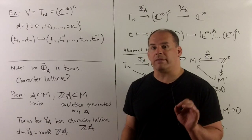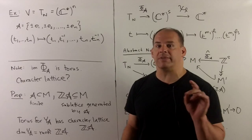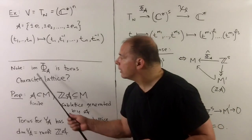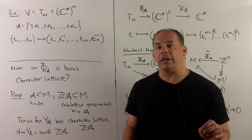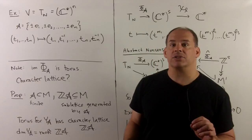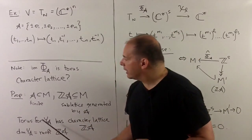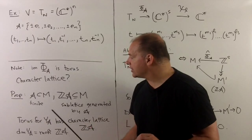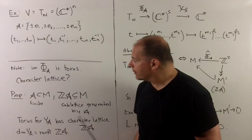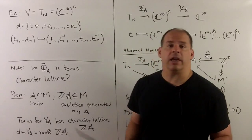For our next description of a toric variety, we need a little abstract nonsense. This gives us the description of affine toric varieties in terms of ideals and makes dealing with the Zariski closure clearer. The image of φ_A is a complex torus, and a natural question is: what is the character lattice? A group theorist who knows the character lattice knows the torus. Proposition: if A is a finite subset of the character lattice M, and we take the Z-span of A inside M — the sublattice generated by A — then the torus for Y_A has character lattice ℤA.